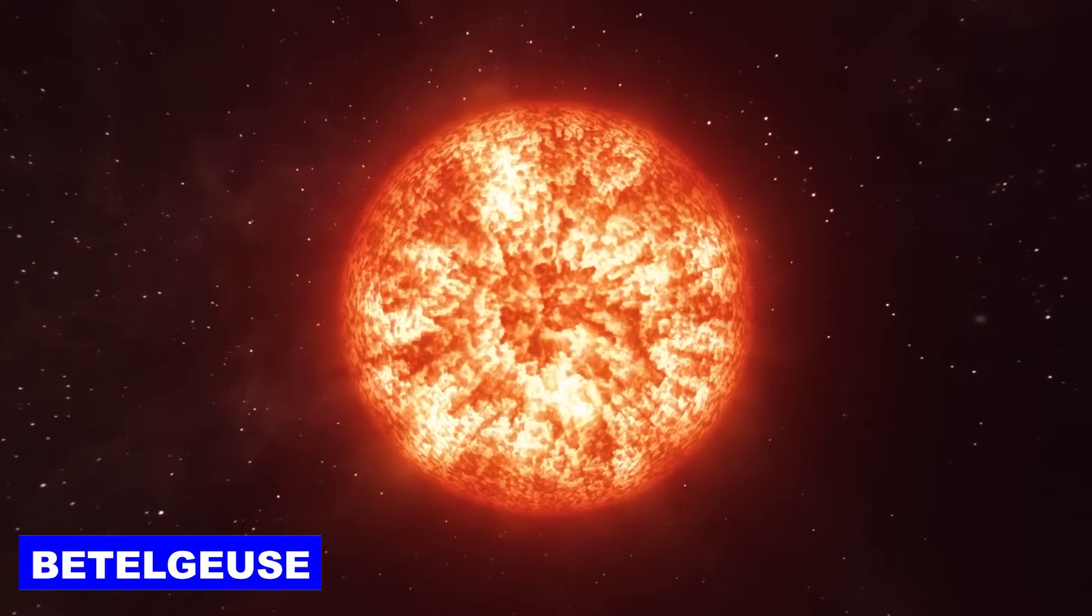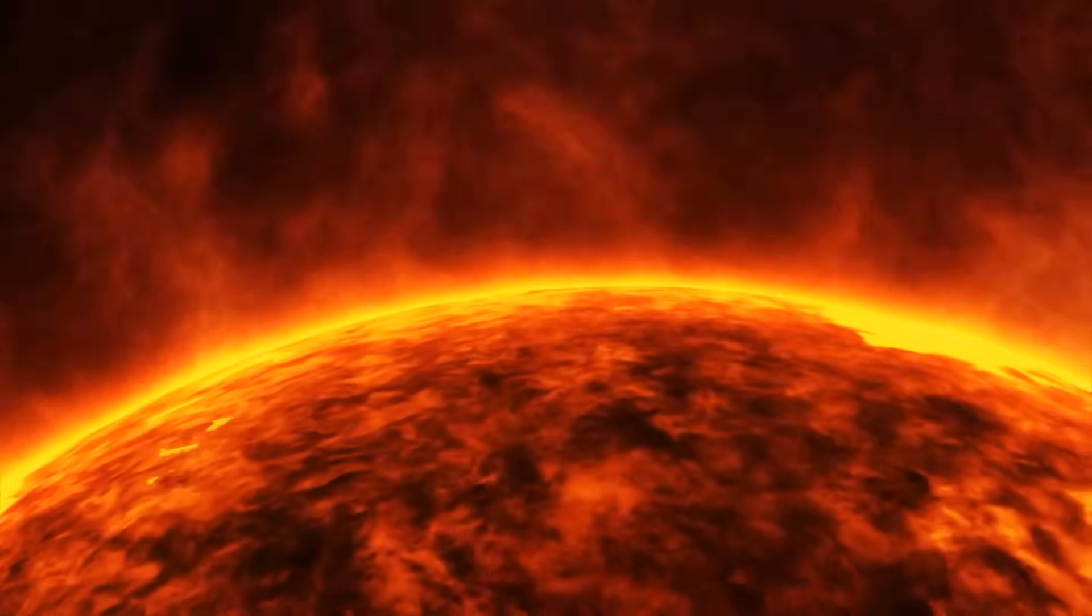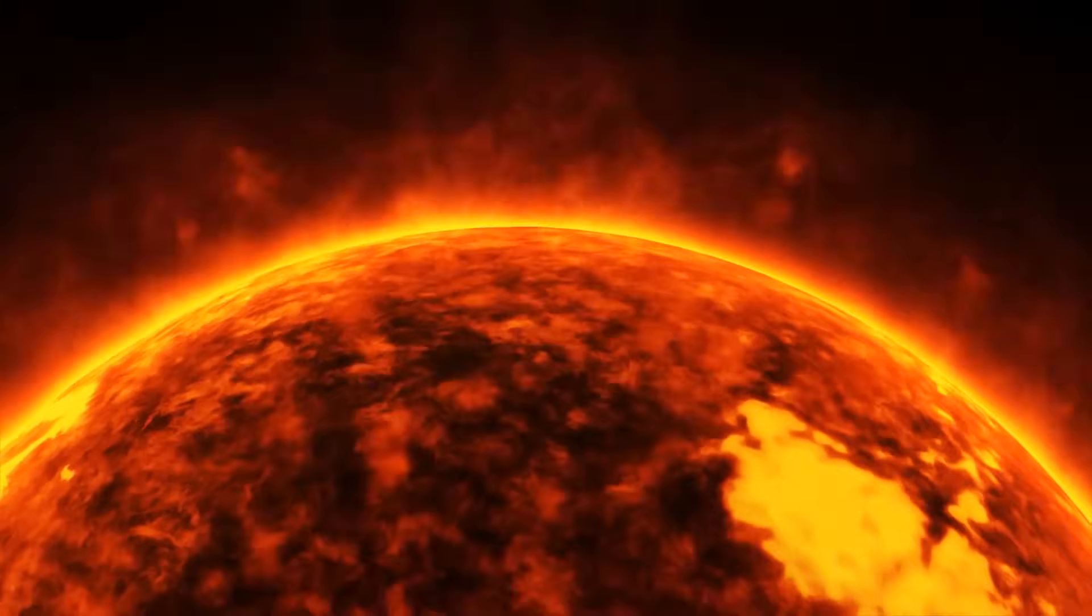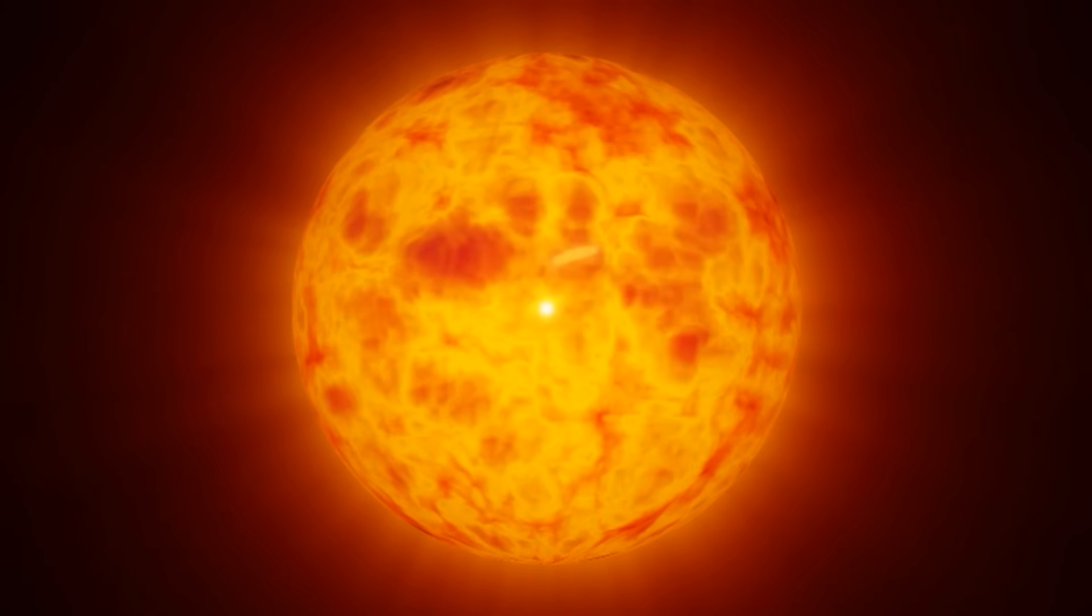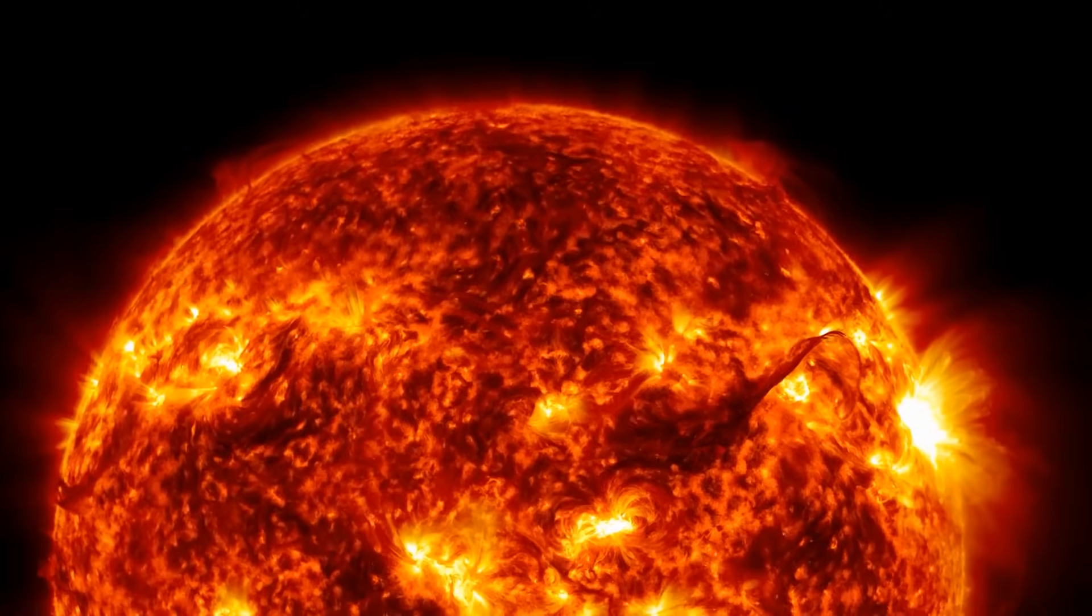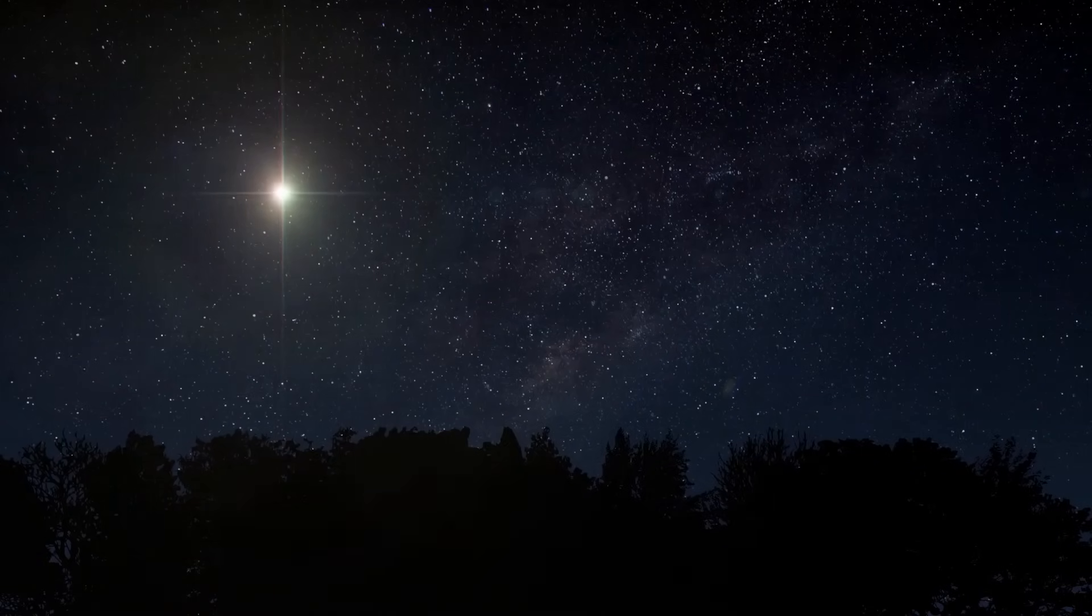Betelgeuse, characterized by its distinctive red hue, is a red supergiant star located in the Orion constellation. It is one of the most imposing stars visible to the naked eye, with a diameter about 900 times that of our sun. This extraordinary size and its relative proximity to Earth make it a prominent presence in our night sky.